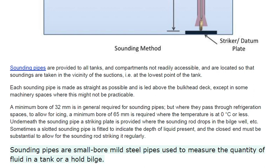A minimum bore of 32 mm is generally required for sounding pipes. But where they pass through refrigeration spaces, which will be much colder, to allow for icing, because icing will form and occupy more space, a minimum bore of 65 mm is required where the temperature is at 0 degrees Celsius or less.